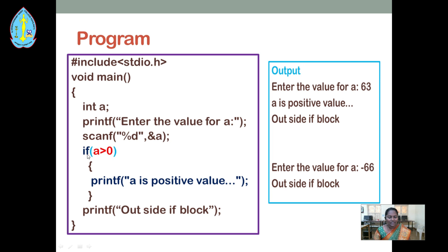After that, we are going to apply the simple if condition: if a is greater than 0. If the value of a is greater than 0, within the block of statement, I have given only one statement — printf 'a is a positive value'. For example, if you enter the value 63, it will check if 63 is greater than 0. The condition is true, so it will print 'a is a positive value'. In the output screen, it will print that a is a positive value.